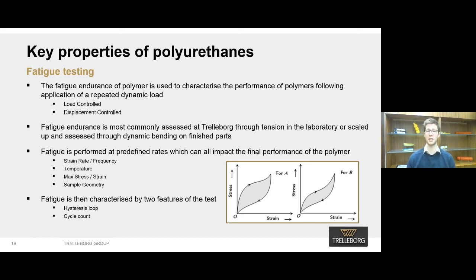There are two hysteresis loops on your screen right now. On the left, we can see a hysteresis loop with quite a big area between the traces, whereas on the right there's a much smaller area. Because the trace on the right has a smaller area between the traces, it means there's less fatigue going on in the material, so it will last longer in dynamic applications. Whereas this test is quite long and expensive to perform, it's critical in understanding that the quality of our parts is maintained across the entire life cycle of the product.